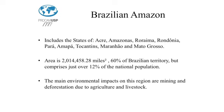Here we have some data about the Brazilian Amazon region. It includes the states of Acre, Amazonas, Roraima, Rondônia, Pará, Amapá, Tocantins, Maranhão, and Mato Grosso. Its area is over 2,000 square miles, which is 60% of Brazilian territory, but comprises just over 12% of the national population. The main environmental impacts on this region are mining and deforestation due to agriculture and livestock.